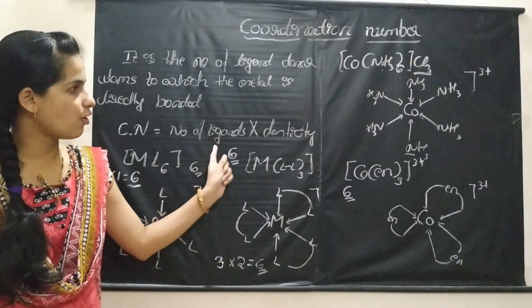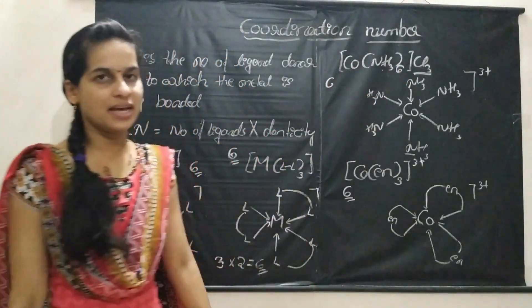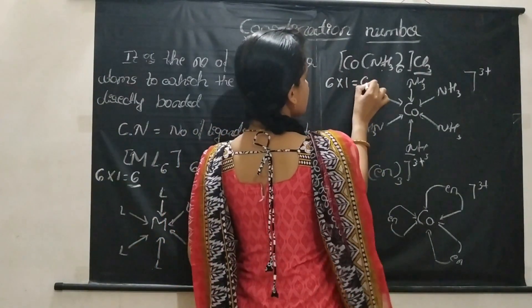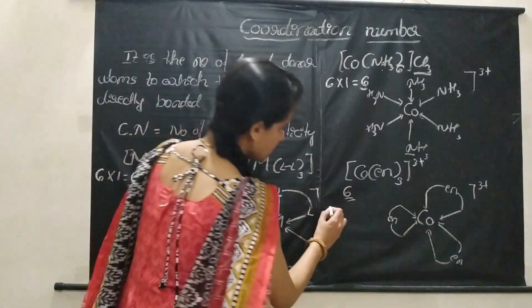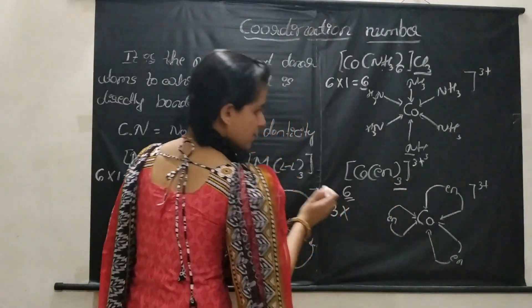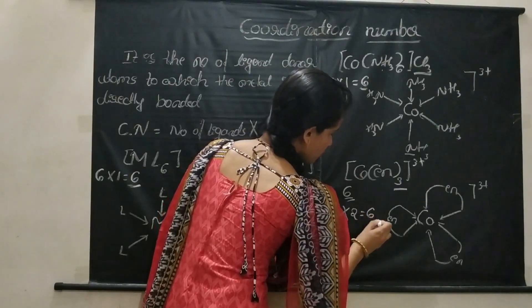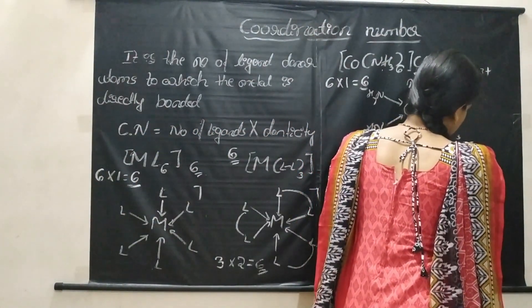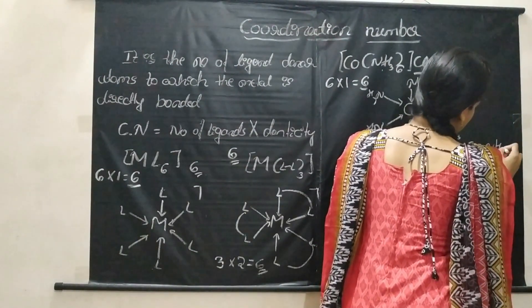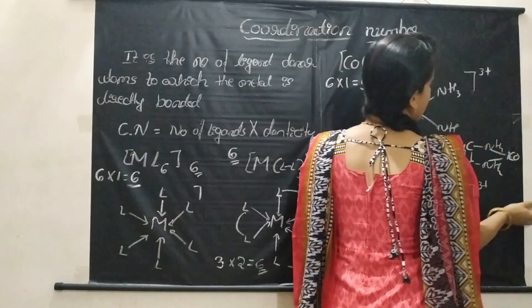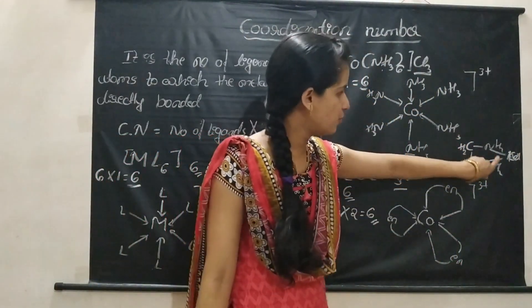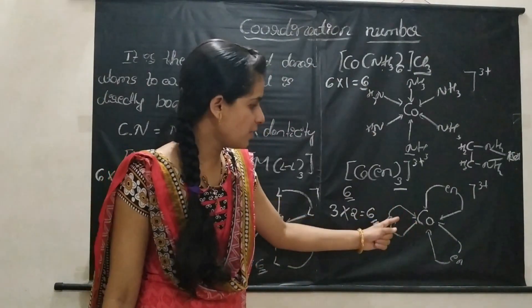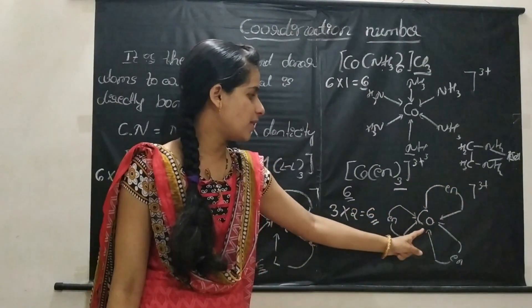Using the formula: for [Co(NH3)6], there are 6 NH3 ligands and denticity equals 1 (ammonia is unidentate), so 6 × 1 = 6. For [Co(en)3], number of ligands is 3 and ethane-1,2-diamine is a didentate ligand with denticity 2, so 3 × 2 = 6. If you can't visualize the structure, note that en is H2N-CH2-CH2-NH2, and 2 nitrogen atoms donate pairs of electrons to the central metal atom. For [Co(en)3], the 2 nitrogen atoms of each of the 3 ethane-1,2-diamine molecules donate to cobalt.